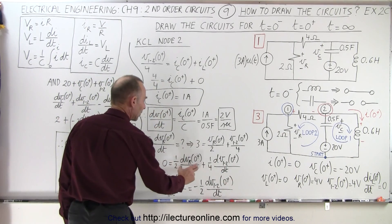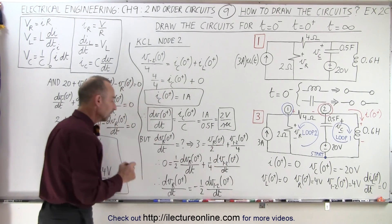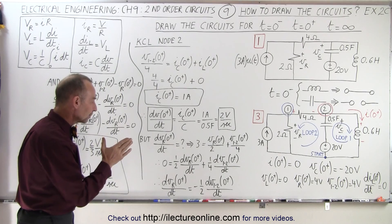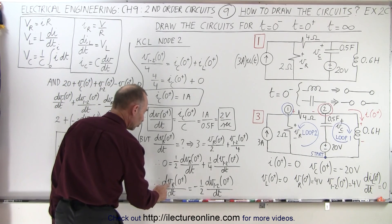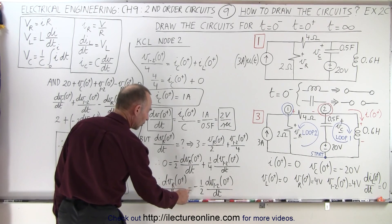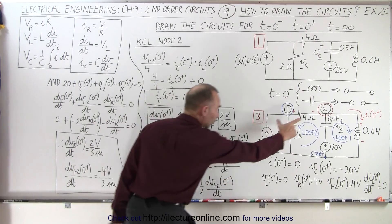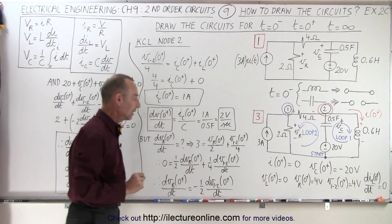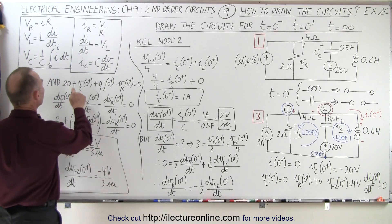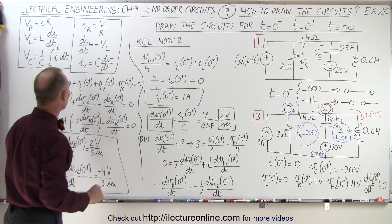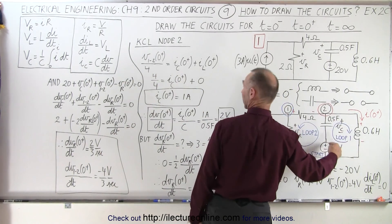We get one-half times dVr/dt and one-quarter dV/dt. Solving this for the change in voltage with respect to time across the resistor, it's going to be negative one-half times the change in voltage between the two nodes divided by dt. Keeping that in mind, we now go to the other equation that came from going around loop 2.